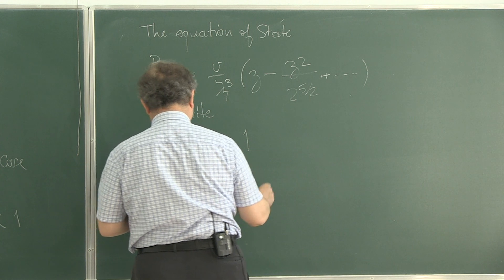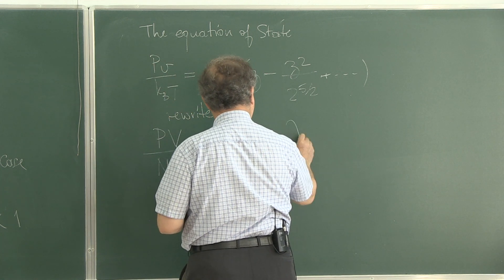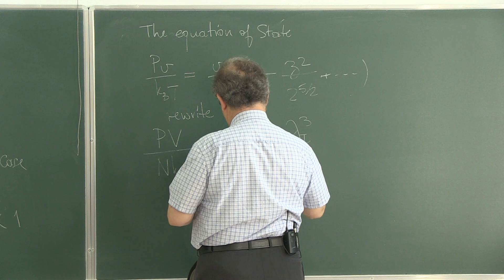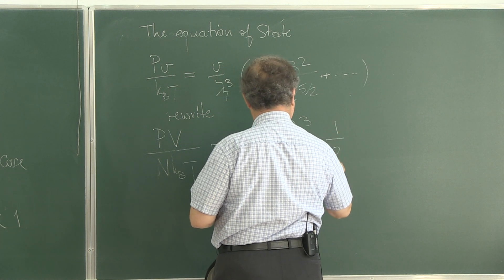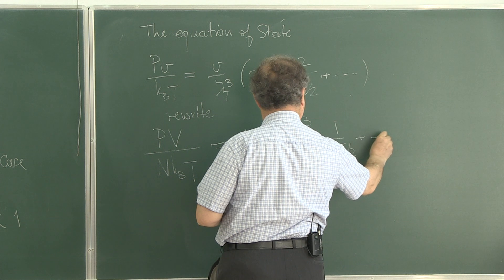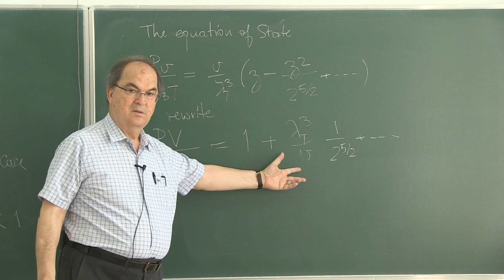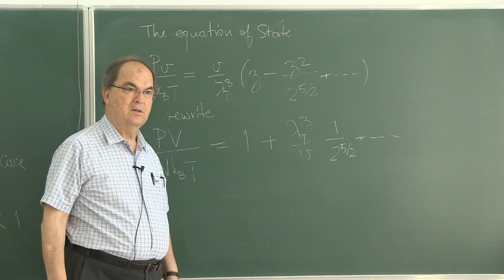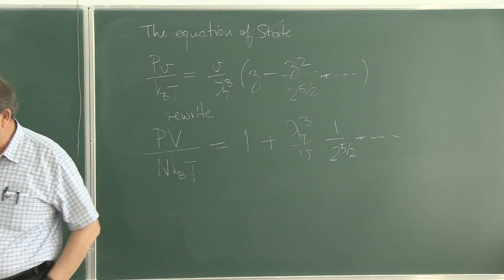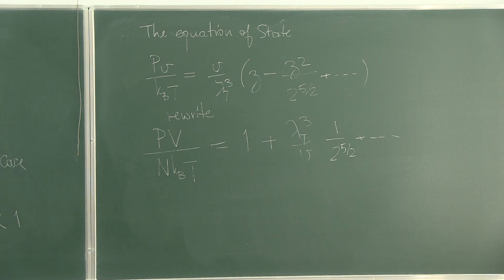But there are corrections. Although small, there are corrections. See, this is a correction to the classical result, isn't it? And that correction is coming from quantum effects. It's not coming from interactions between particles. It is purely quantum mechanical.